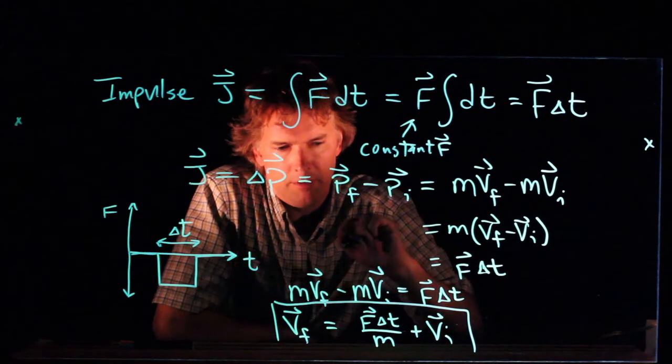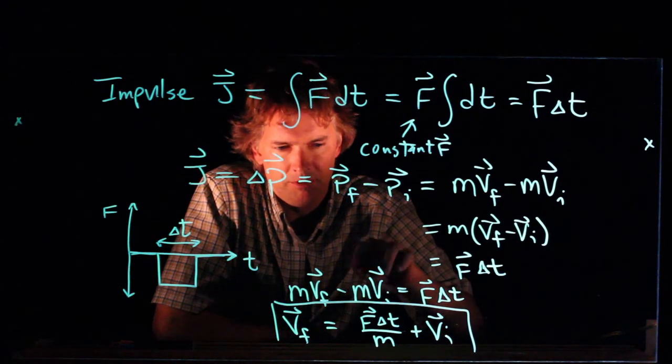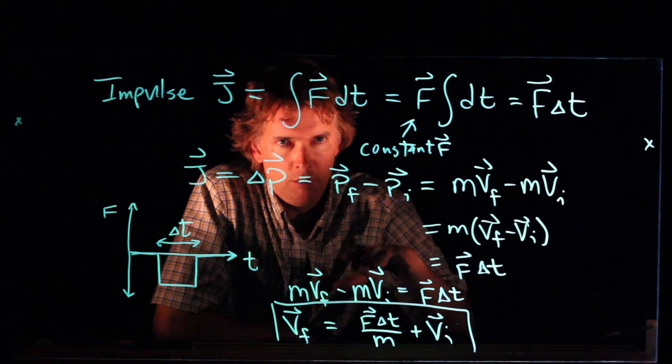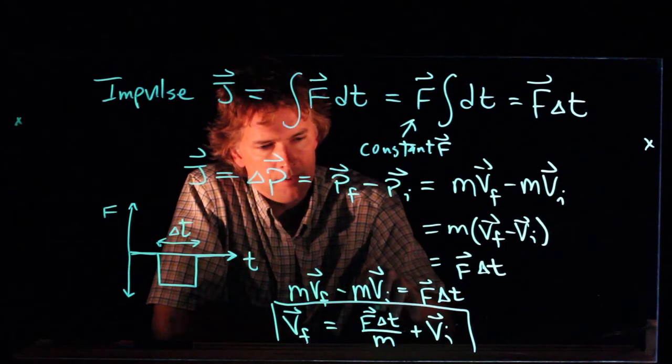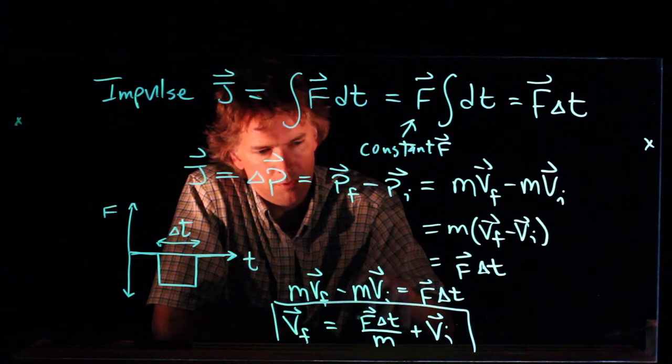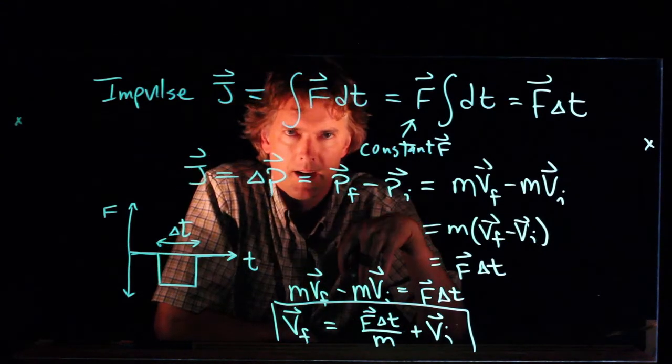So let's just look at this answer for a second and make sure it makes sense. If there is no force applied, then there should be no change in the velocity. And that's indeed what happens. If f is zero, this whole thing drops out, and we just get v final equals v initial.